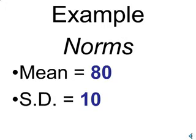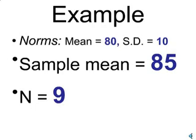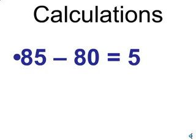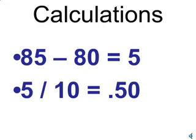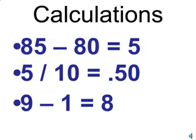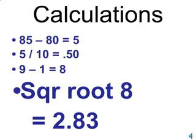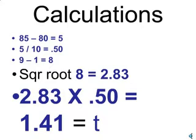Let's look at an example. Suppose we have a population mean of 80 and a standard deviation of 10. We find a sample mean of 85 with a sample size of 9. For the numerator, 85 minus 80 equals 5. We divide by the standard deviation of 10 to get 0.5. Our degrees of freedom are 9 minus 1, which equals 8. We take the square root of 8 to get 2.83, then multiply by 0.5.